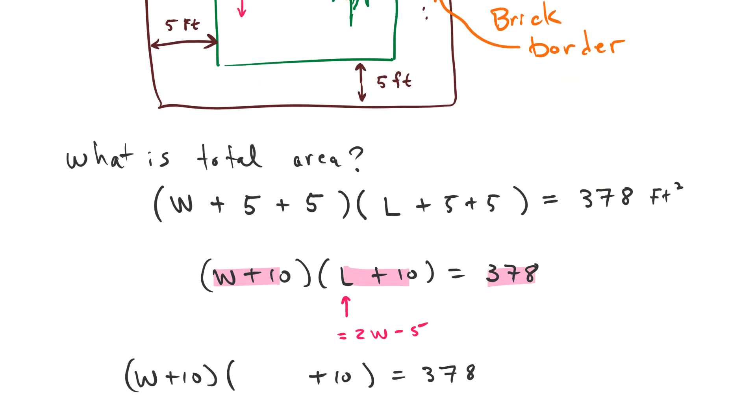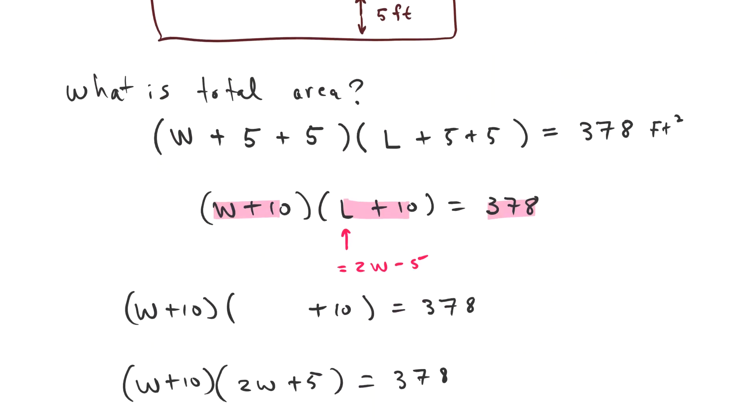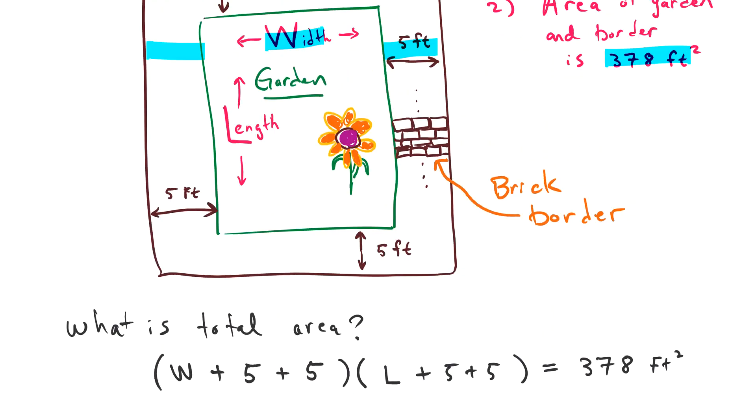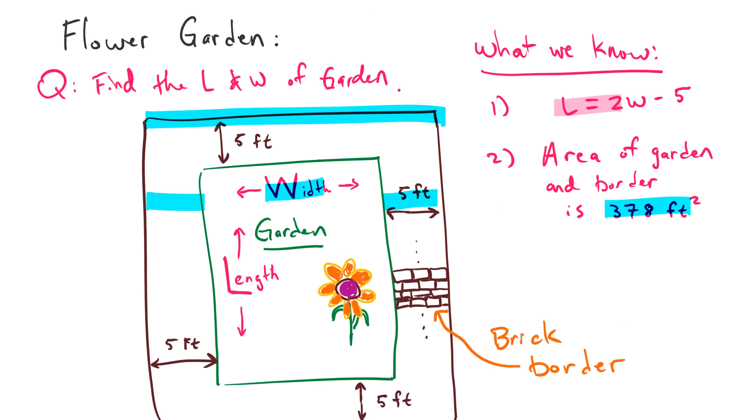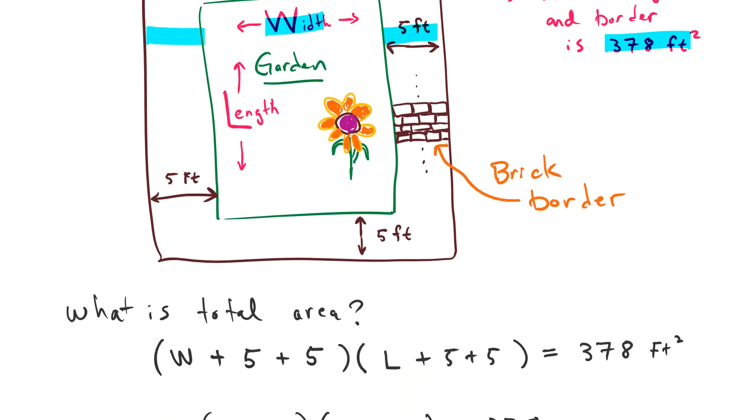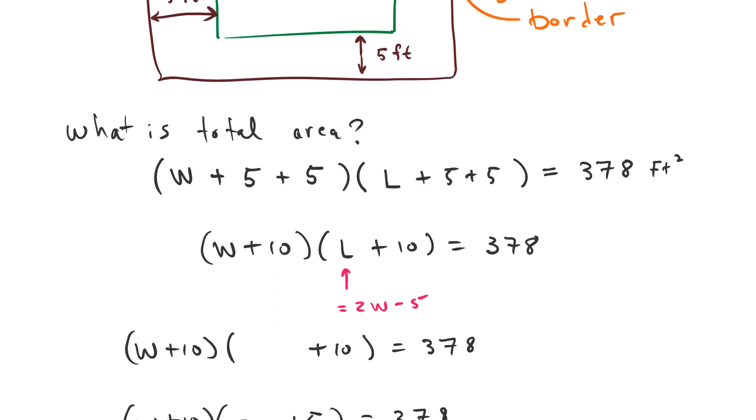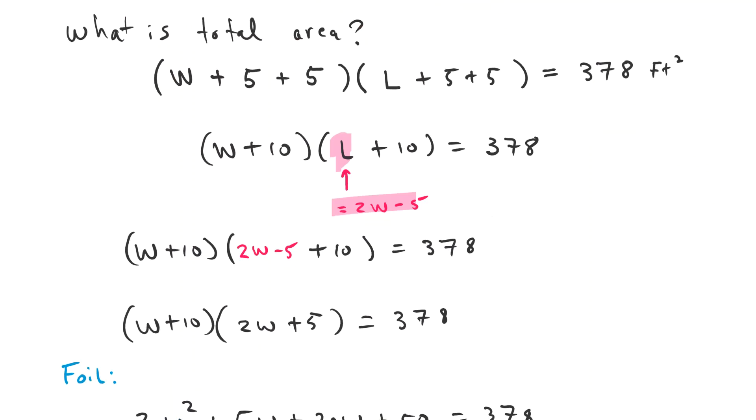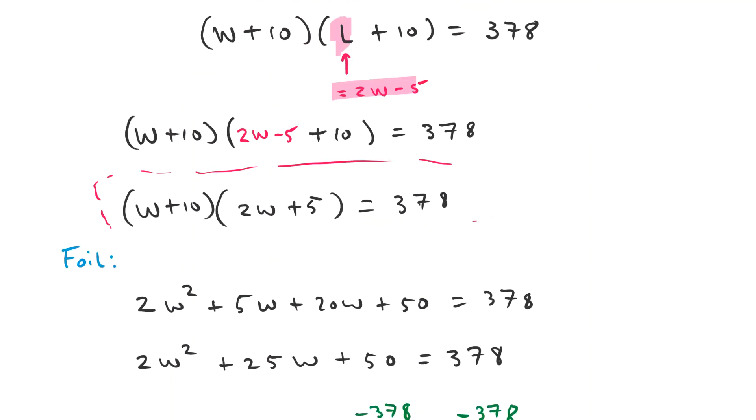So instead of having length there, we can now use the last piece of information, this right here: length equals 2W minus 5. And we're going to put it in here for length, so 2W minus 5. Negative 5 plus 10 gives us positive 5 here. This is just really a foiling problem though.